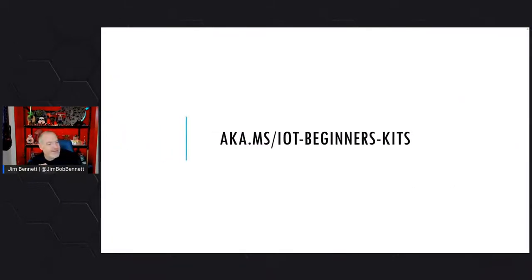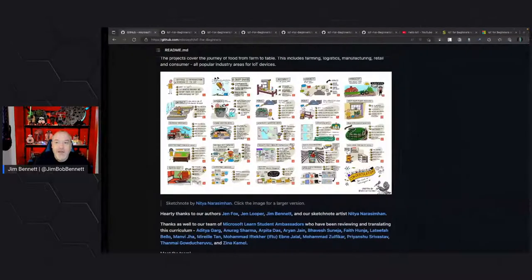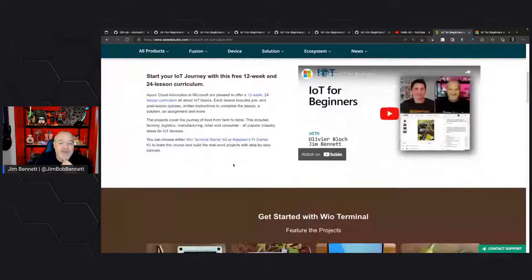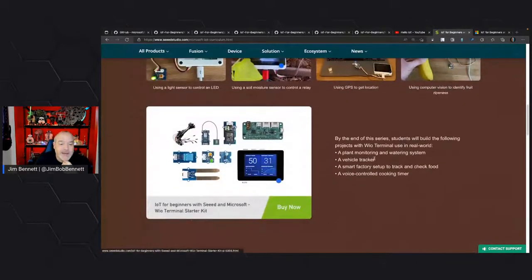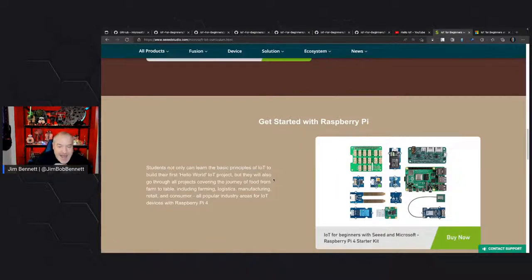One last thing I want to mention: the T in IoT stands for things, and so IoT usually involves hardware. When you're doing an IoT deployment, you need some kind of hardware to actually use. Our friends at Seeed Studios have made it easier to buy the hardware for this. If you follow the link just dropped in the chat, it takes you to a page on Seeed Studio where you can buy either the Wio Terminal Kit or the Raspberry Pi Kit.